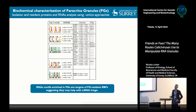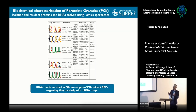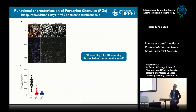We searched for motifs within mRNAs triaged into paracrine granules, and the top five motifs enriched in mRNAs found in paracrine granules are all binding sites for specific proteins enriched in the granules—for example, proteins from the SRSF splicing factors family, HUR, HNRNPC, SFRS1, and also G3BP1 and G3BP2. This suggests those proteins are important for selectively triaging specific subsets of mRNAs containing those motifs into the granules.